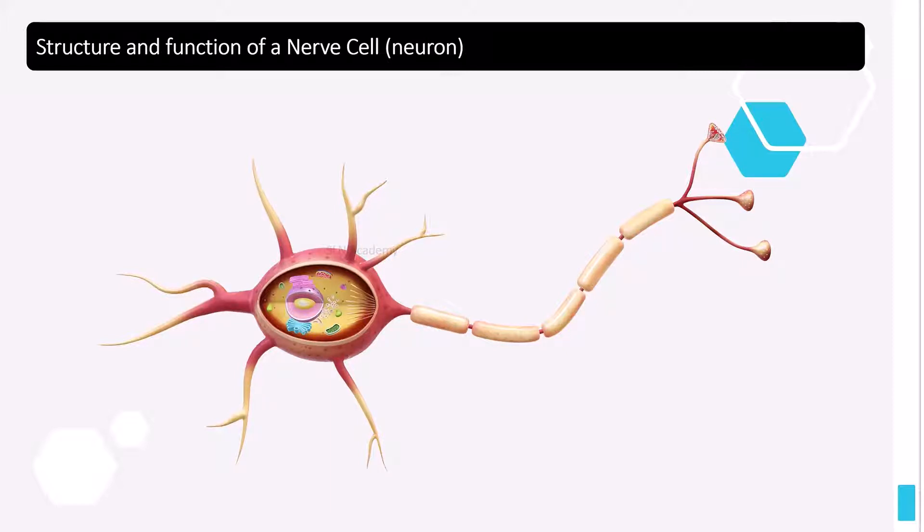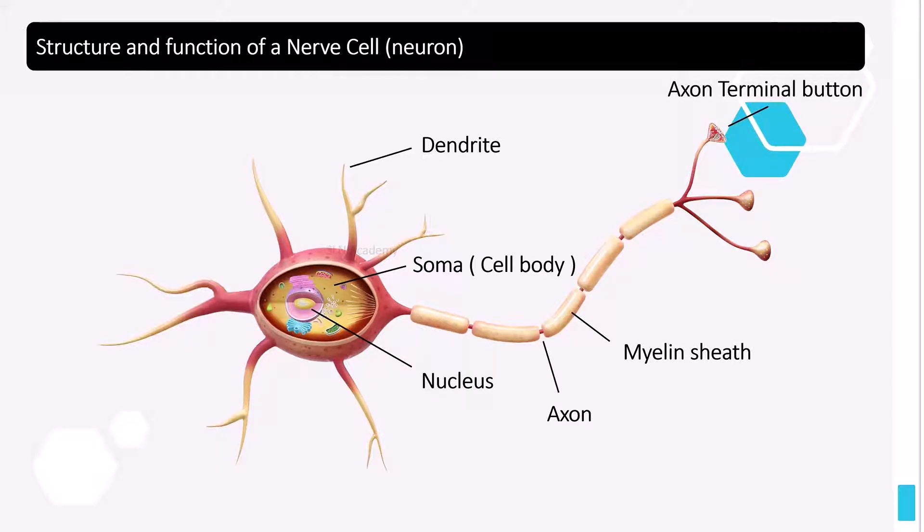Parts of a nerve cell are: dendrites, soma, nucleus, axon, myelin sheath, axon terminal button.